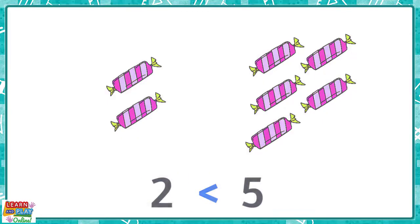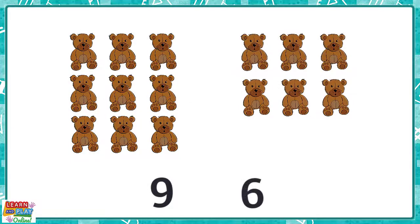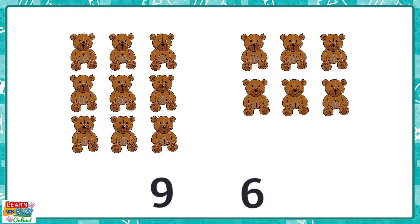Here is another one for you to try. There are nine teddies on this side and six teddies over here. Think about which number the crocodile would want to eat. If you drew this symbol, you'd be correct. The number sentence would read nine is greater than six.